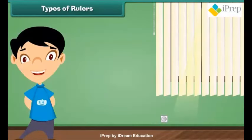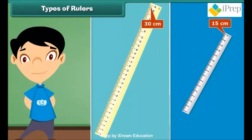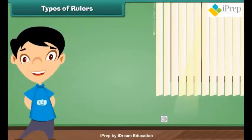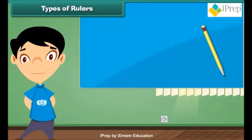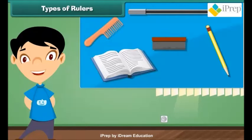A ruler comes in different lengths. The first ruler seen can measure length up to 15 centimeters. The second ruler seen can measure length up to 30 centimeters. But a ruler cannot measure all objects. Ruler is used to measure only short length objects such as pencil, stick, notebook, duster, comb, etc.